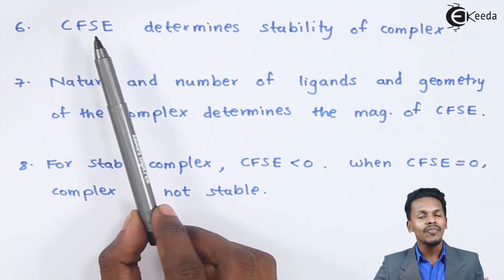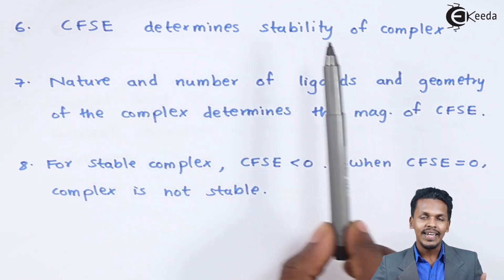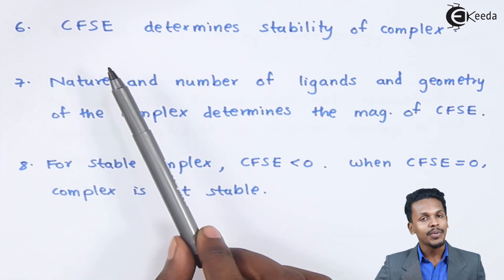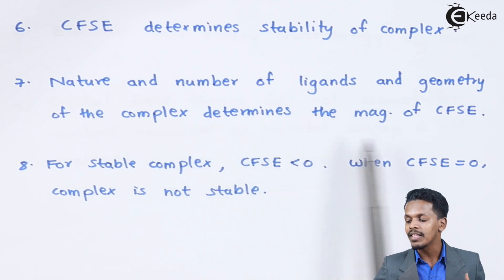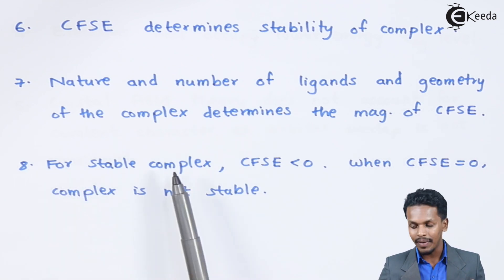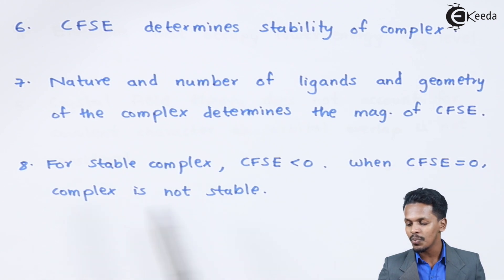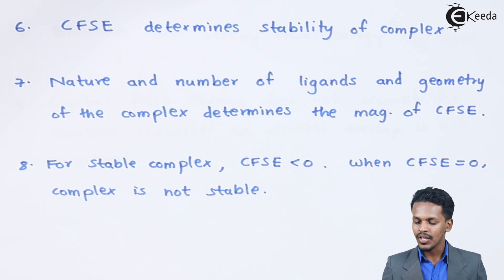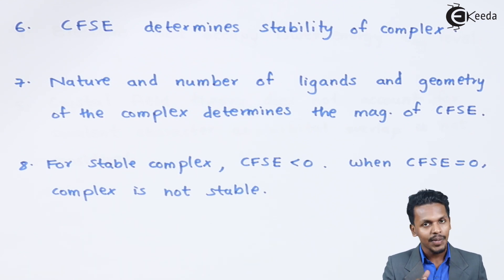The sixth point is that CFSE (crystal field stabilizing energy) determines the stability of a complex. The nature and number of ligands and the geometry of the complex determine the magnitude of CFSE. For a stable complex, CFSE must be less than zero; when CFSE equals zero, the complex is not stable. The energy level difference between T2G and EG determines whether the complex is stable.